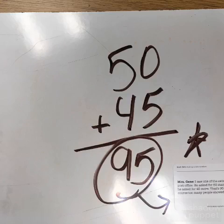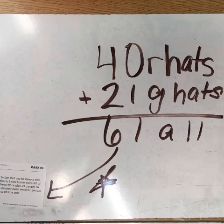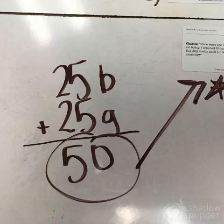I read the first clue card and then I solved it. I saw that their math was correct, so it can't be that person. Then I solved clue number 2, and they did the correct math too, so it can't be that person. Then I solved clue number 3, and they did the correct math too, so I knew it couldn't be that person either.